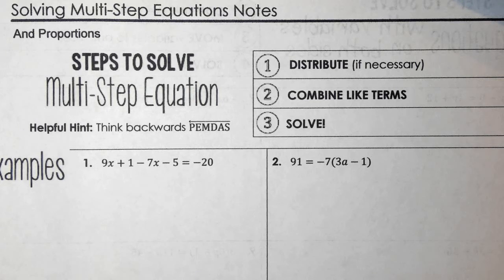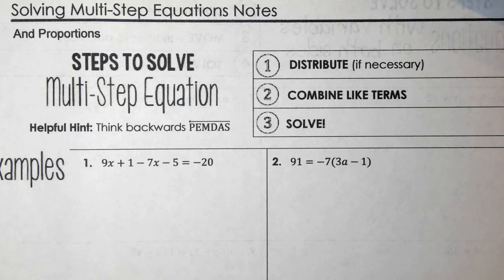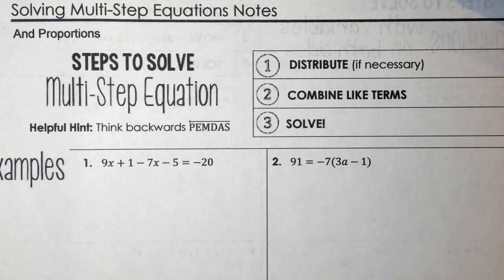So our first example is number one. The equation is 9x + 1 - 7x - 5 = -20. In this equation, the first thing you should see is that you have the variable x twice — you have 9x and 7x. So before we can solve for x, the first thing we need to do is combine like terms, the same way we did it in our last set of notes.